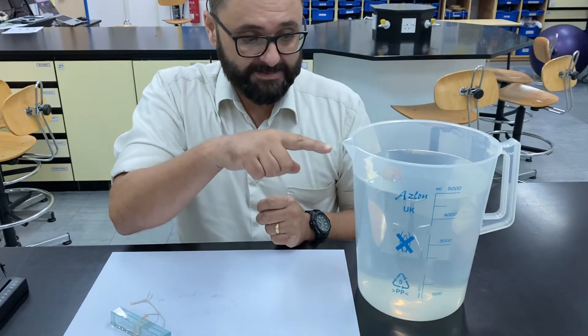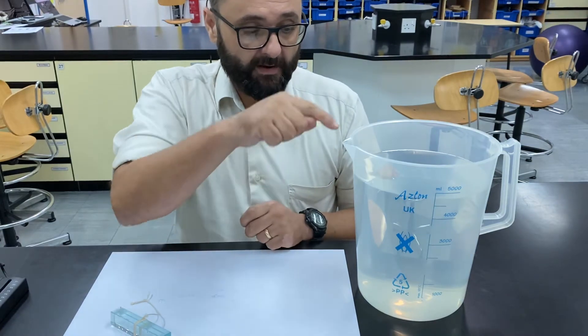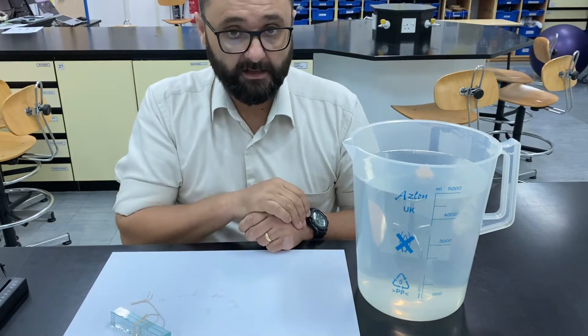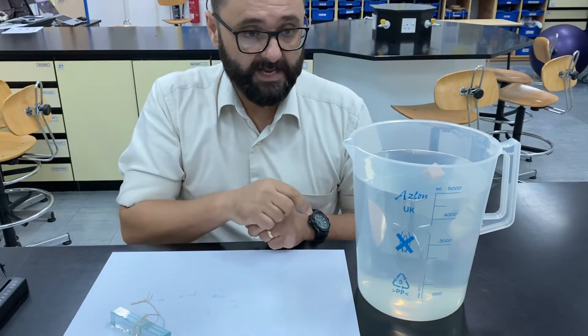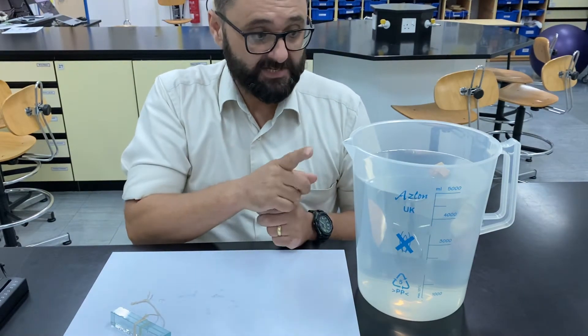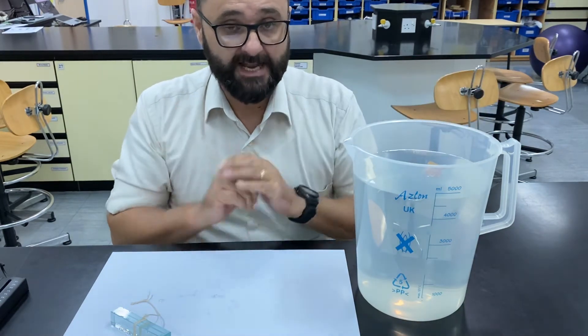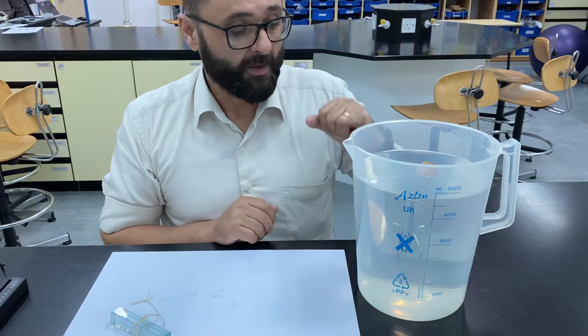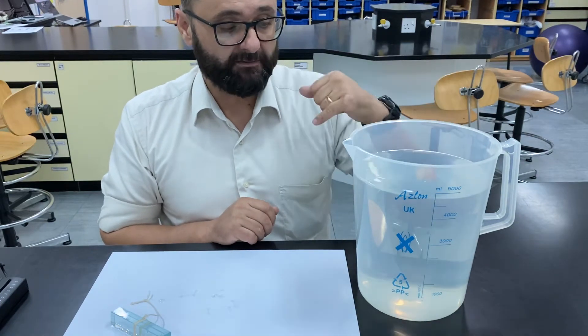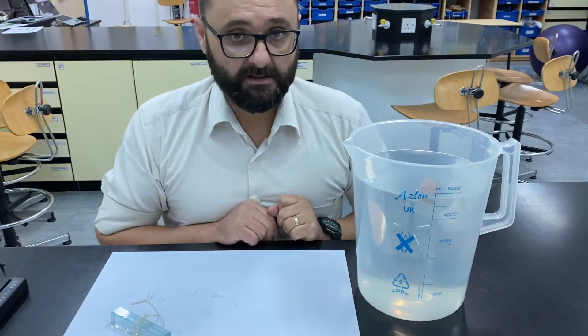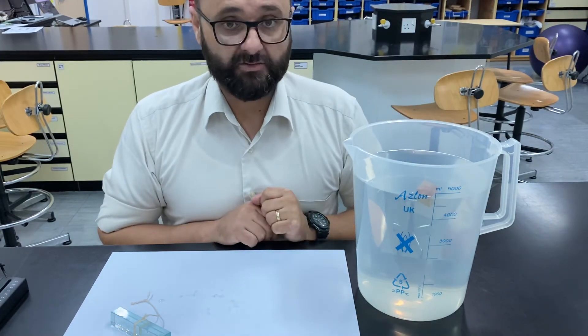The weight of the water that is being displaced by the amount of that wooden block that's under the water, the amount of water displaced, the weight of that is actually equal to the weight of the block, so it's managing to balance it out. There's enough upthrust to keep that afloat, there's enough upthrust to balance the weight pulling down on the actual block.